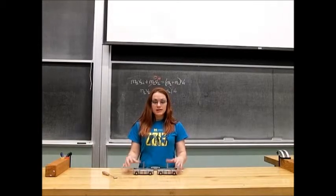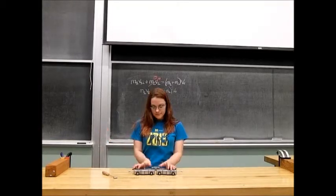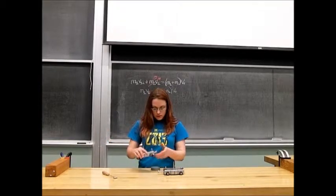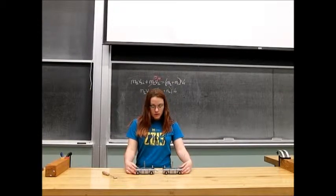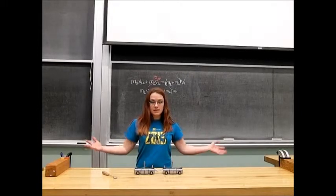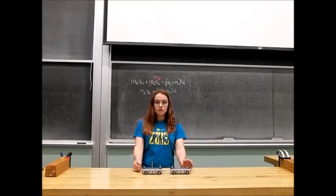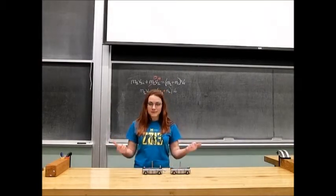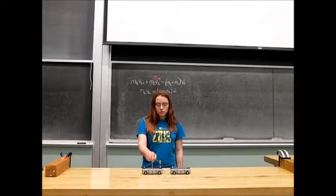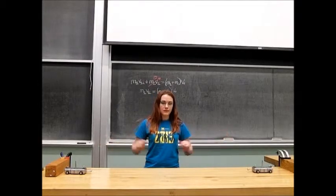One final collision type is to show what happens when the carts start together and end apart. We are going to have equal masses, give them an initial momentum, and see them fly apart. If they have equal masses, you should expect the carts to go off at the same velocity in opposite directions. In three, two, one. As you saw, they moved apart at about the same rate.